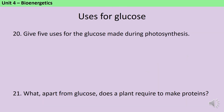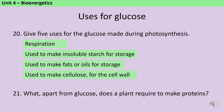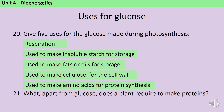Much of the glucose made during photosynthesis is used directly for respiration to provide the plant with energy, but it can also be stored in a number of forms. The glucose can be joined together to make a large insoluble polymer called starch. It can also be used to make fats and oils. If joined together in a different way, it can be used to make cellulose, which is part of the cell wall and provides strength and support. Or the glucose can be combined with nitrate ions absorbed from the roots in order to make amino acids, which are then used for protein synthesis.